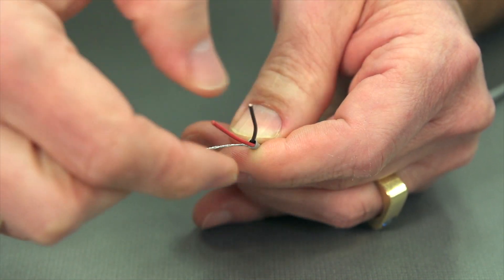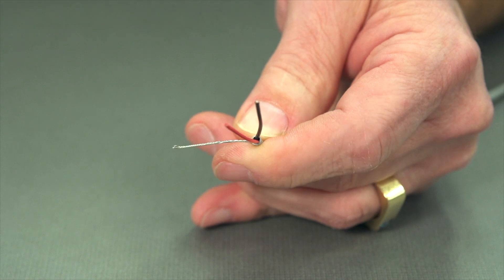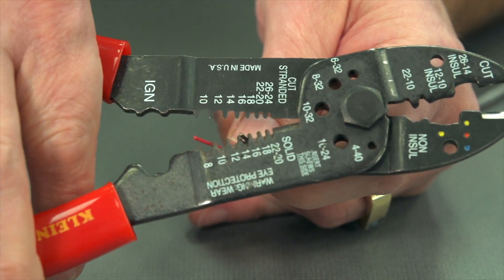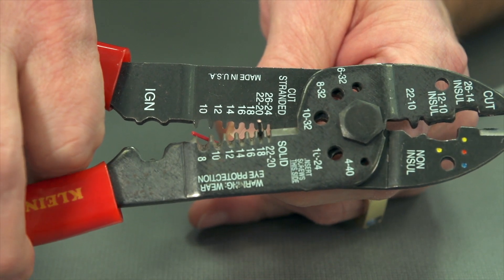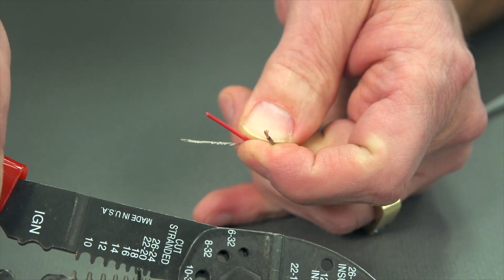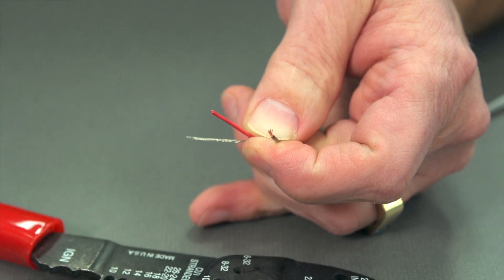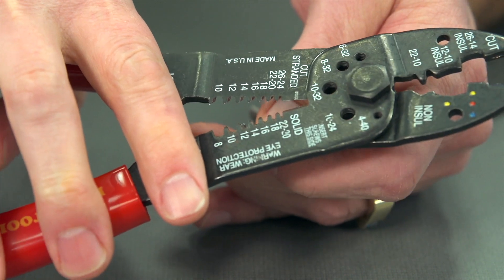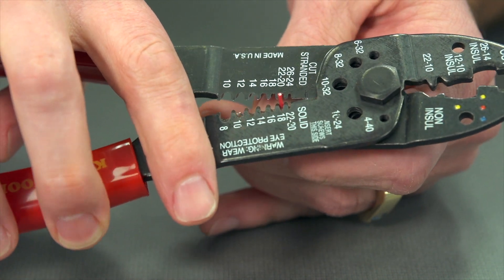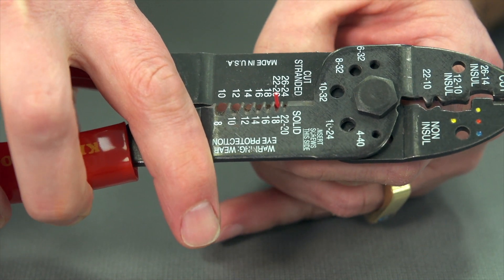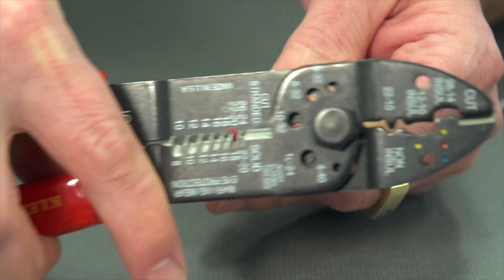And now we want to trim our two conductors here. And so we're going to go into the 22 gauge stranded. Just squeeze down. Pull it out. If you have the right size stripper, make sure nothing's stuck in the gate there. Put my drain wire out. And pull it. It'll come right out.